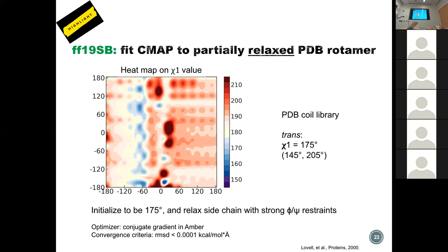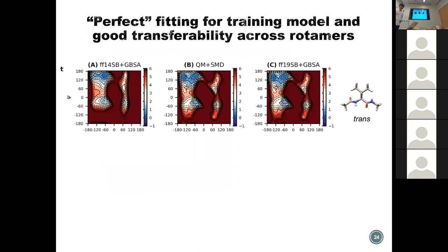We use the optimizer implemented in Amber, which is also used in actual MD simulation, to do this relaxation. The CMAP can do a perfect fitting for the training model, but we want to test the transferability across rotamers. We use the trans rotamer for training — what if the rotamer is different in MD simulation? Here I show energy surfaces from FF14SB, QM, and FF19SB on the trans rotamer. After relaxation they're still in trans, and the QM agrees almost exactly with 19SB because that's how we trained it, while 14SB doesn't match QM — for example, the PP2 region is much deeper than the beta region.